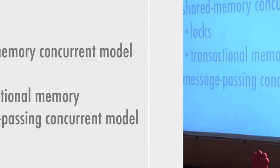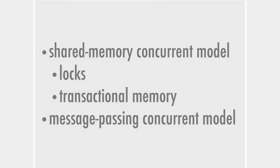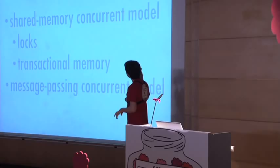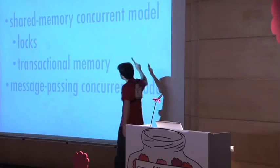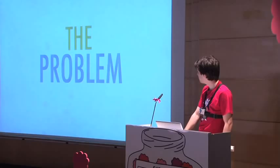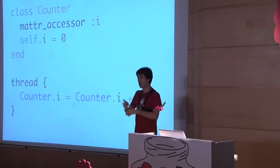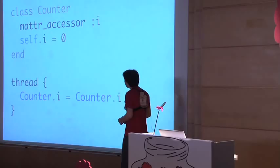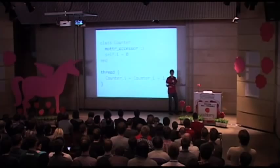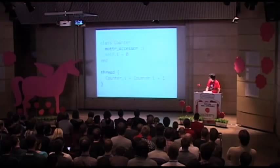We are going to talk about three models. The whole issue is that now we have global state to manage, and we need a way to manage access to it. Two of them are based on shared memory: one using locks and another using transactional memory. And one is a message passing concurrent model. The problem we're going to solve: imagine we have a class Counter — our classes are global — with an accessor initially set to zero. Several threads will read the value, increment it by one, and set it back.